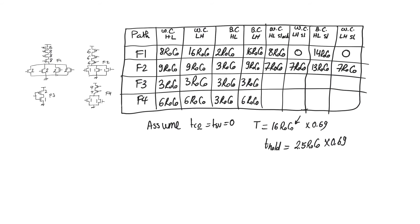For the inverter F3, we have 13 R0C0 slack for all input cases because it has symmetric delay with no distinction between worst and best case. For F4 (two-input NOR), we have 10 R0C0 for most cases and 13 R0C0 for best case high-to-low. Checking for negative slacks: we have zero slack for the four-input NOR, which defines that gate as the critical path. We do not have any negative slacks, so there are no setup time violations.